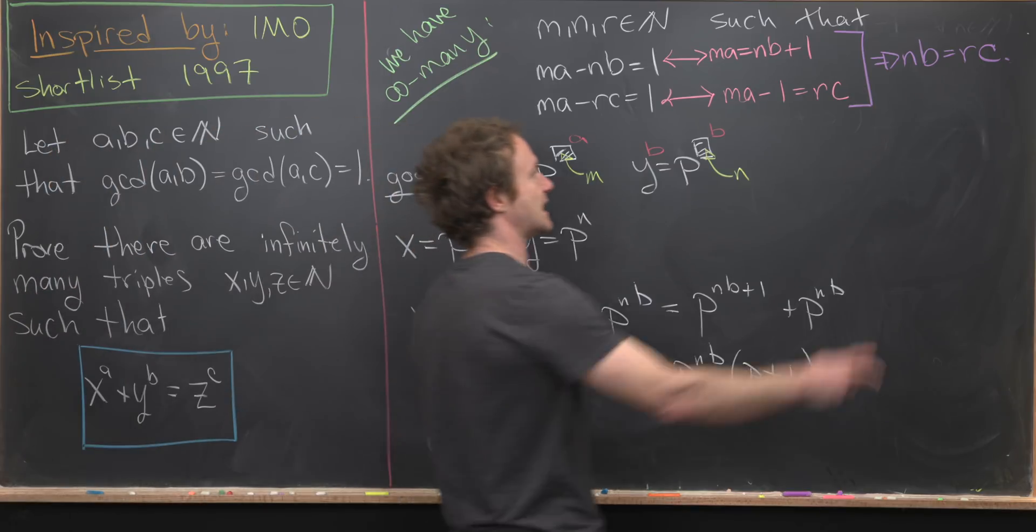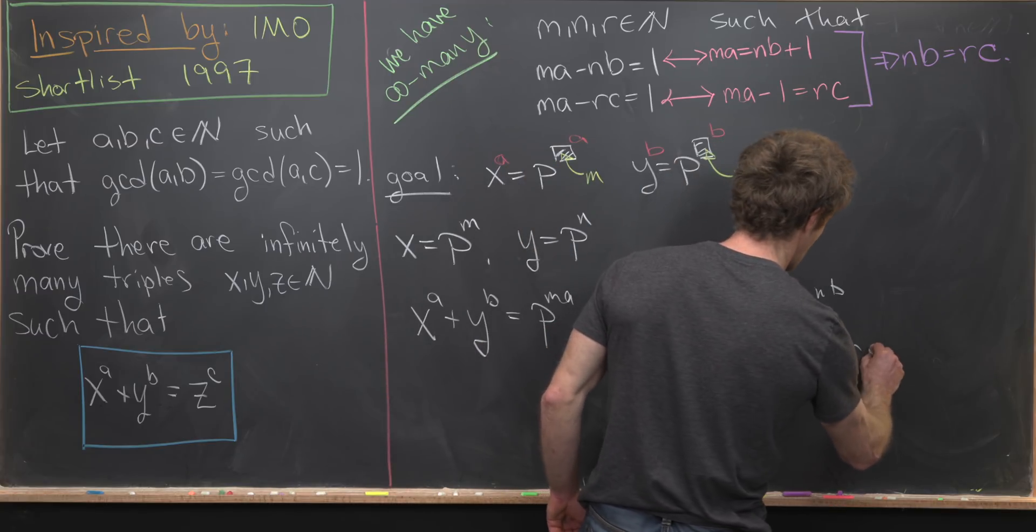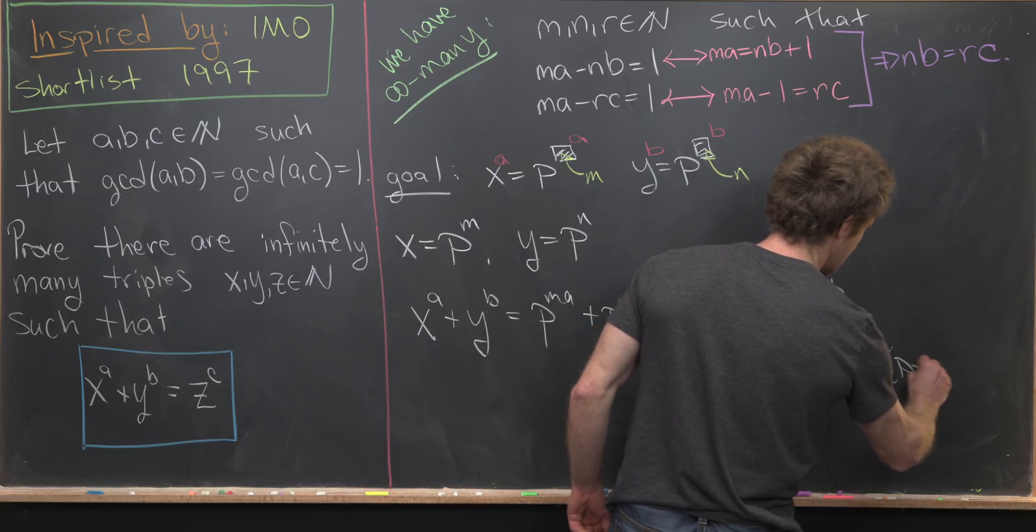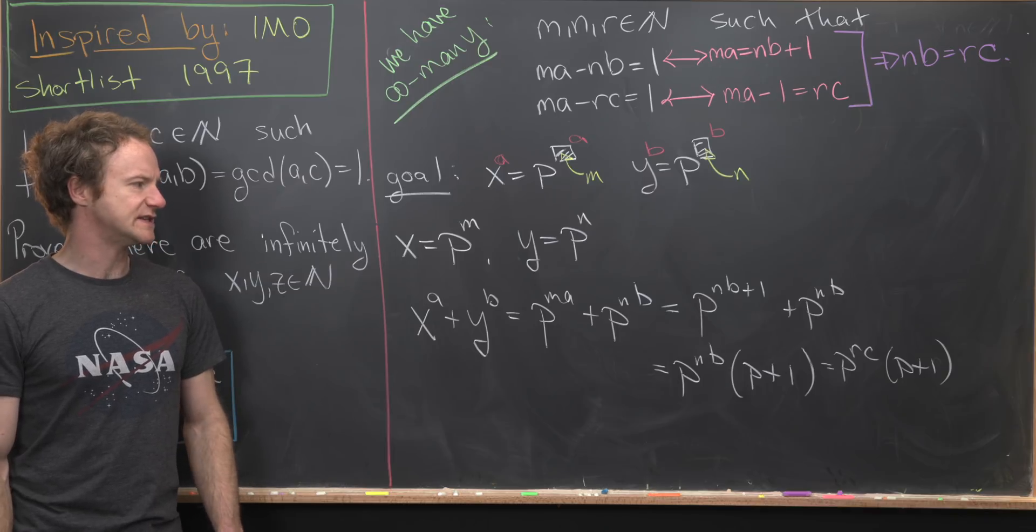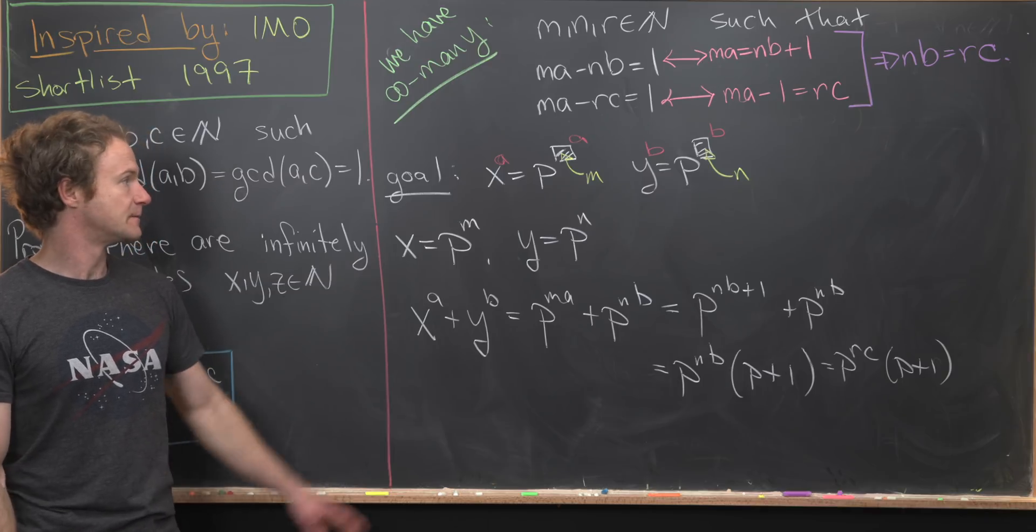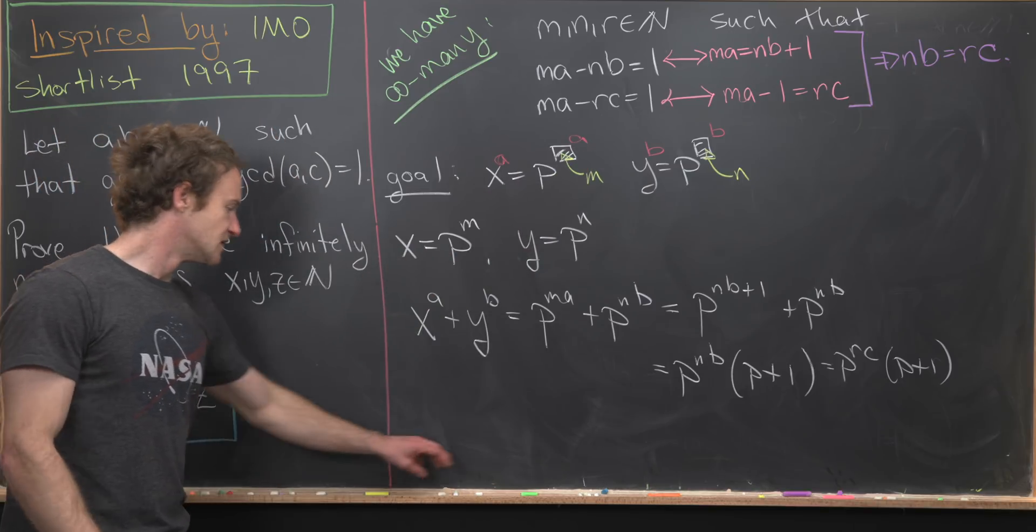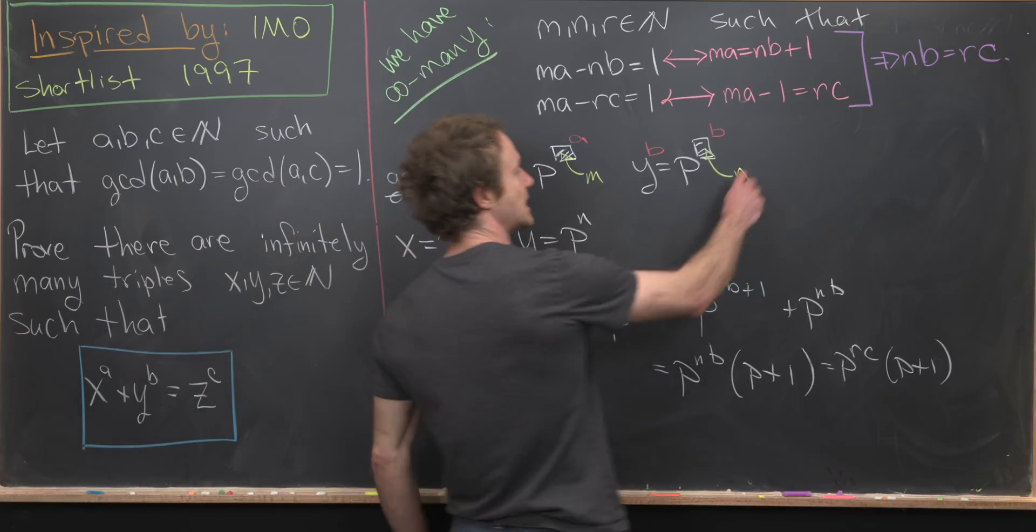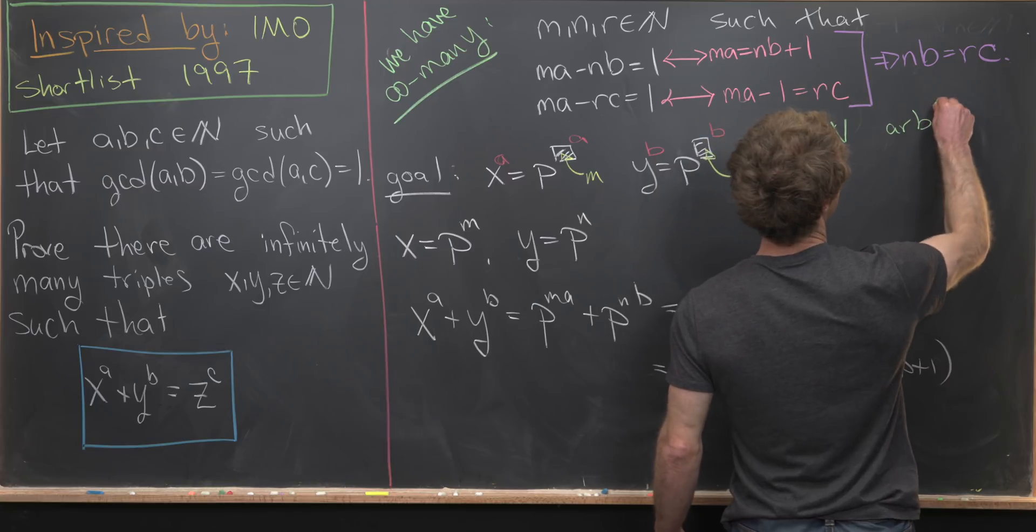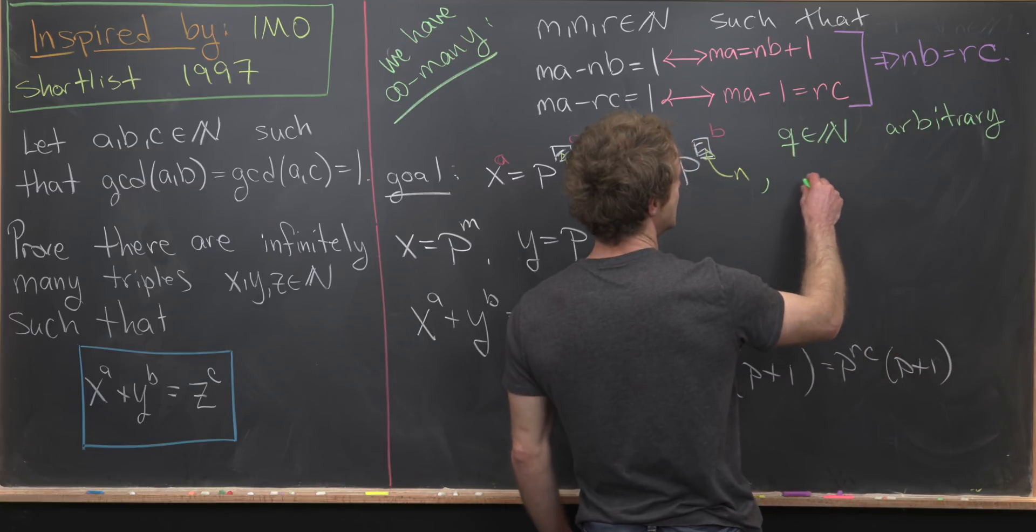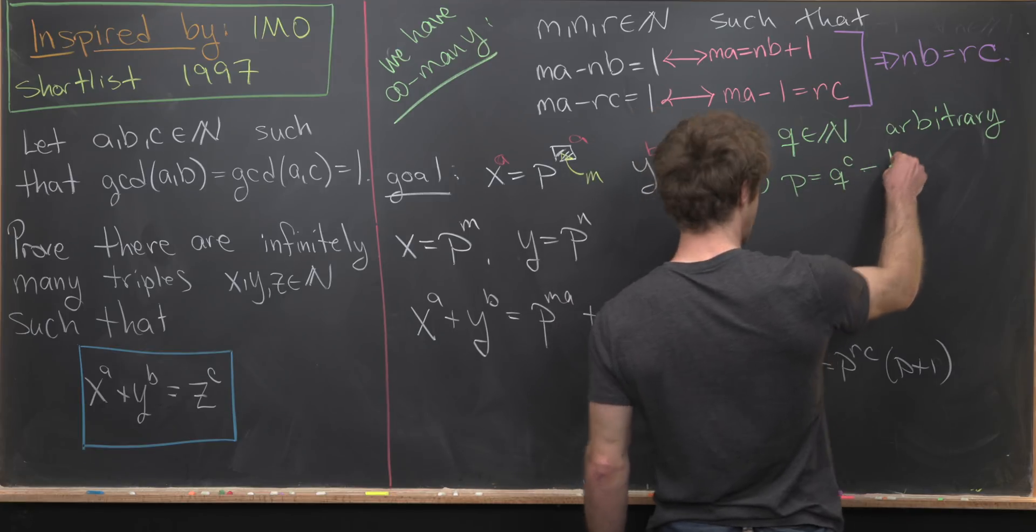And then finally, we can replace NB with RC. That'll give us P to the RC times P plus one. Now we get to the point where we need to choose P carefully. So notice this is for some unknown P at the moment.